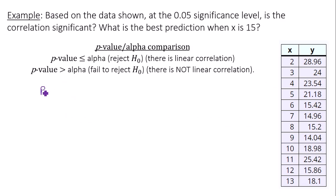So that p-value is 0.0981. We have to compare it to alpha, our significance level. Notice the p-value of 0.0981 is certainly greater than alpha. This means that there is not linear correlation.